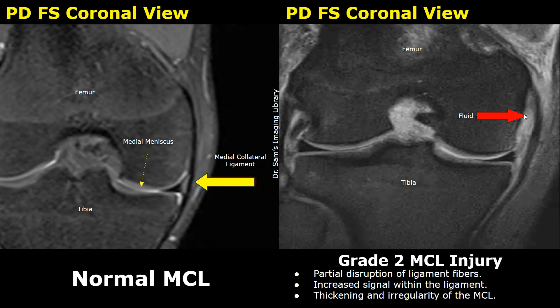Grade 3 MCL injuries include complete rupture of the MCL. A complete tear is present in the ligament — the dark fibrous band is completely disrupted by the bright fluid — indicating a complete tear. The ligament may become retracted in some cases and will appear somewhat folded, moving away from the point of rupture. Associated findings may also include meniscal injury or ACL tear.